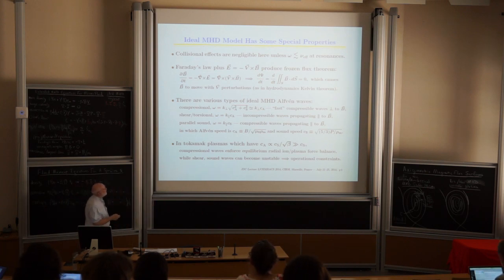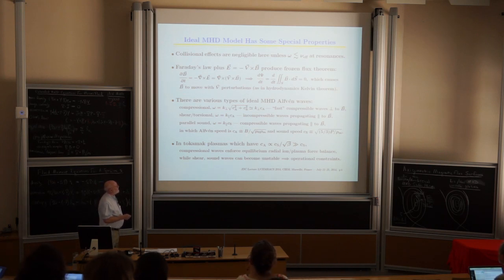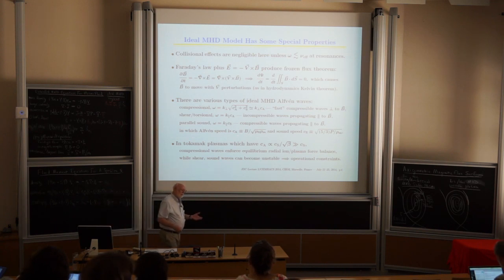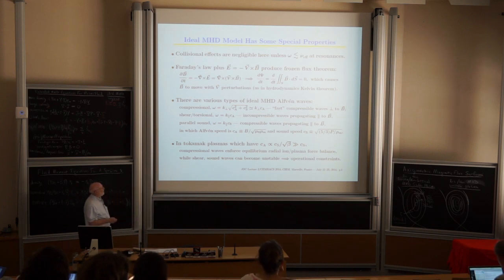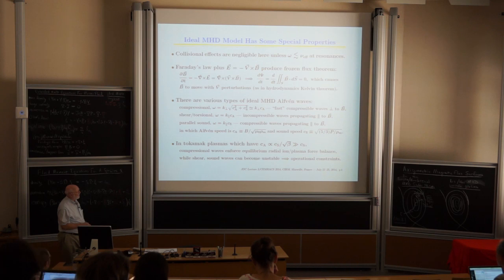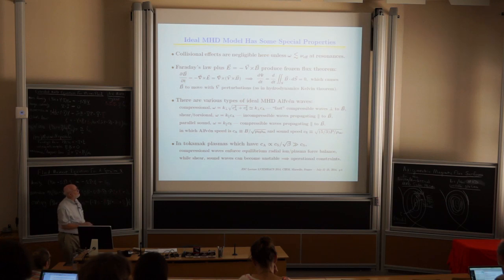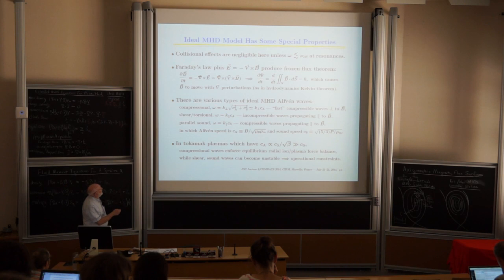There are also parallel sound waves — compressible waves along the field line. The Alfvén speed is given by v_A and the sound speed by c_s. In tokamak plasmas, c_A = c_s / sqrt(beta), where beta is the ratio of plasma pressure to magnetic pressure — which is much greater than the sound speed.